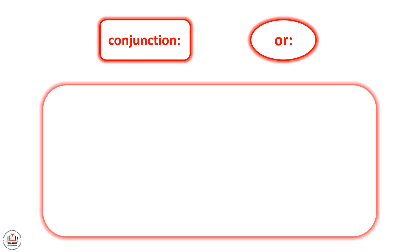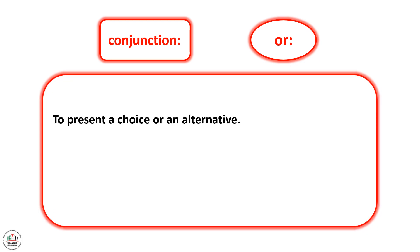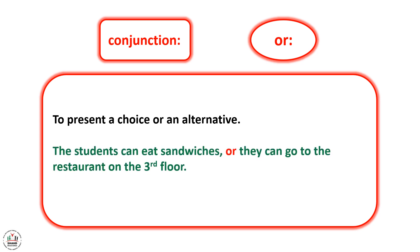We use 'or' to present a choice or an alternative. For example: The students can eat sandwiches, or they can go to the restaurant on the third floor. I will go shopping, or I will go camping.